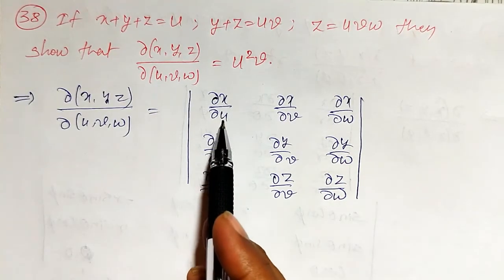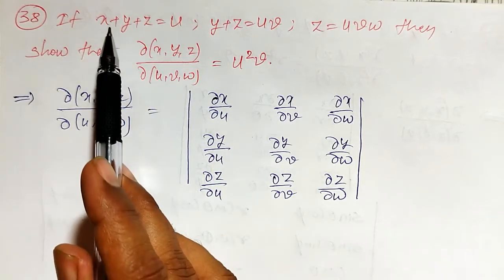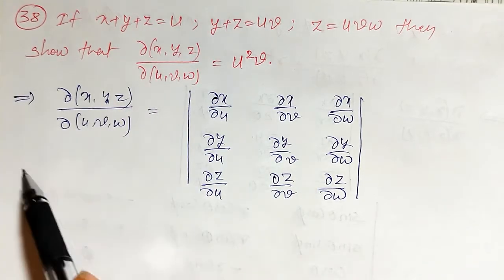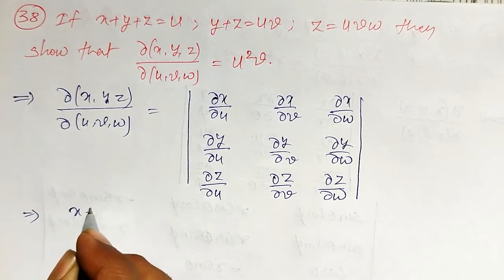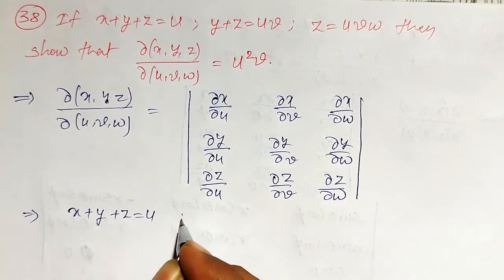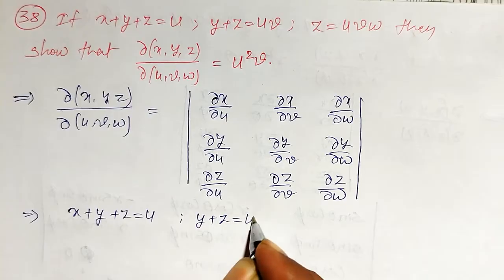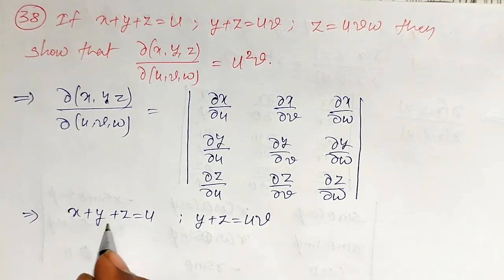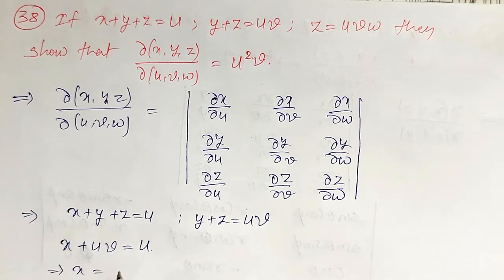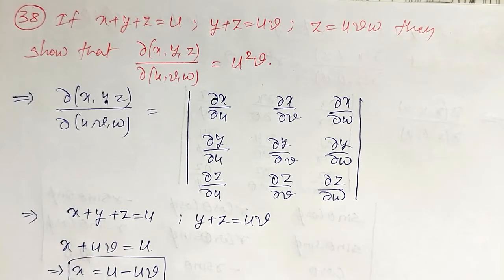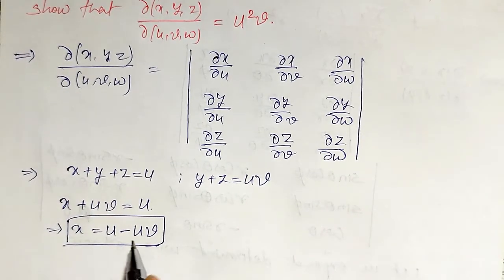To find the Jacobian, x must be purely a function of u, v, w. But they are given x + y + z = u. Let me convert x purely in terms of u, v, w. For that, x + y + z = u is given, and y + z = uv is given. Therefore, I can replace y + z by uv. This implies x + uv = u, or x = u − uv. So purely I am getting x in terms of u and v. W is not there, but anyhow its partial derivative will become 0.